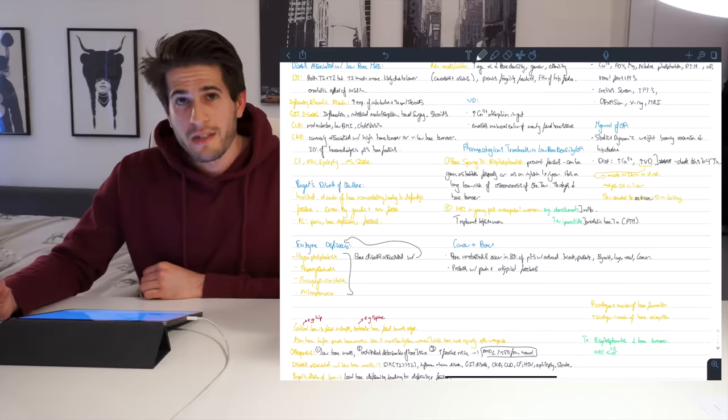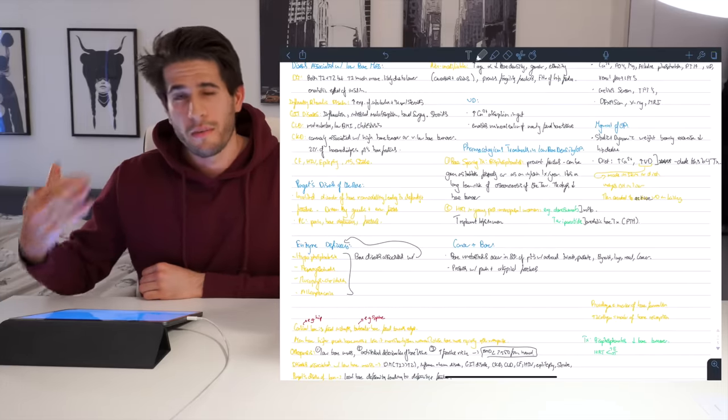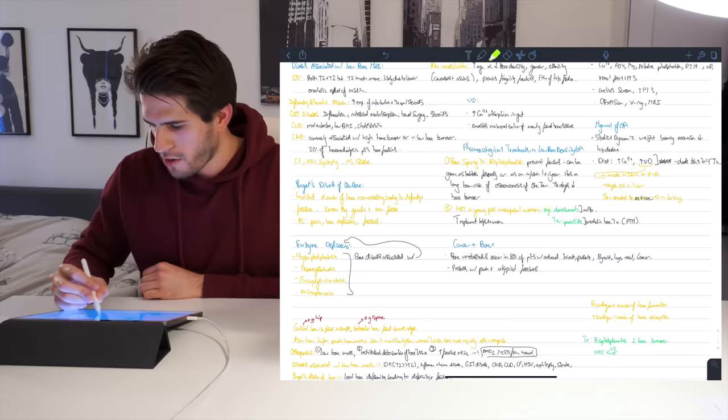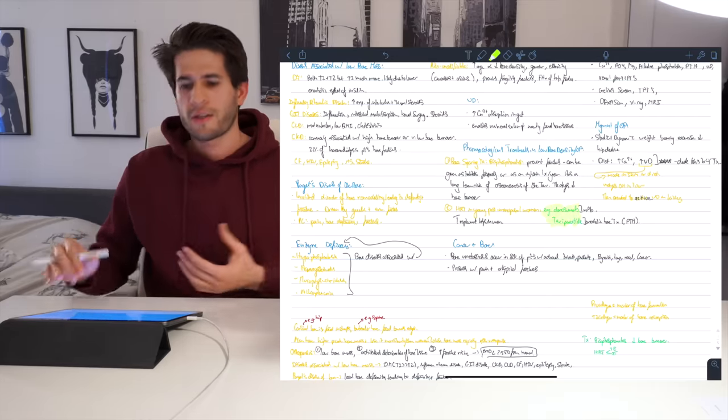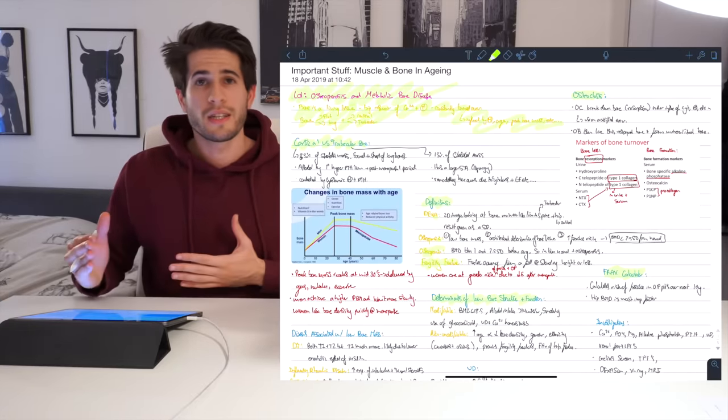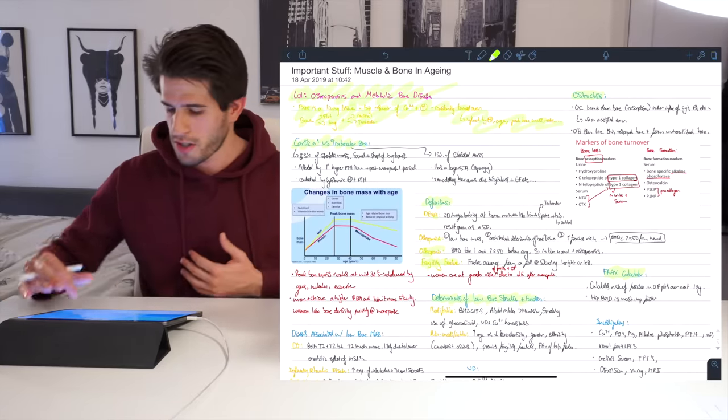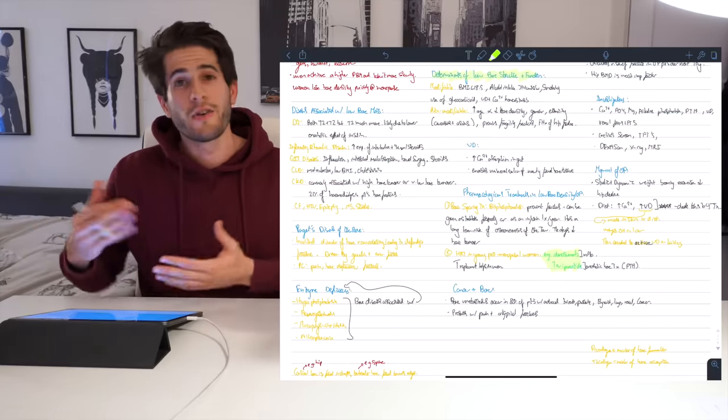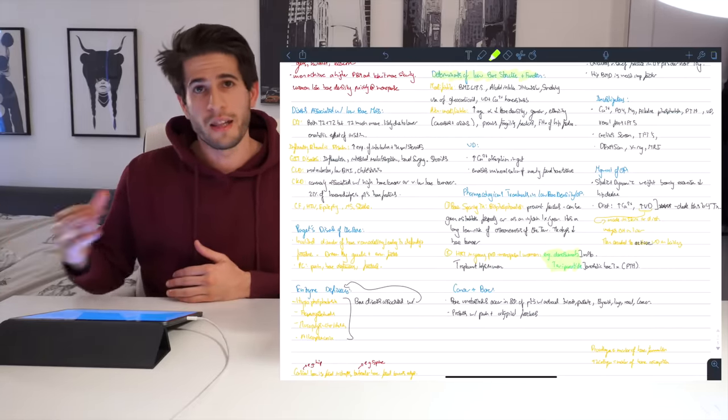After that I write all of my medicines, all of my treatments, anything pharmacology related in this bright green color that you guys can see over here. And so if I'm scrolling through a lecture let's say for here, osteoporosis and metabolic bone disease, and I want to quickly scan to what are the treatments of osteoporosis, I can quickly look for the light green colored words and I know that that's going to be the medications for that lecture.